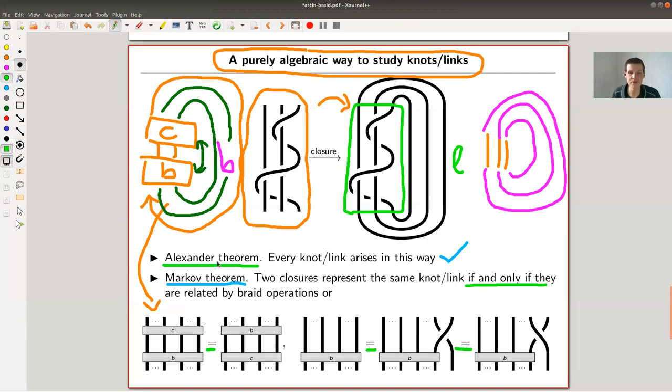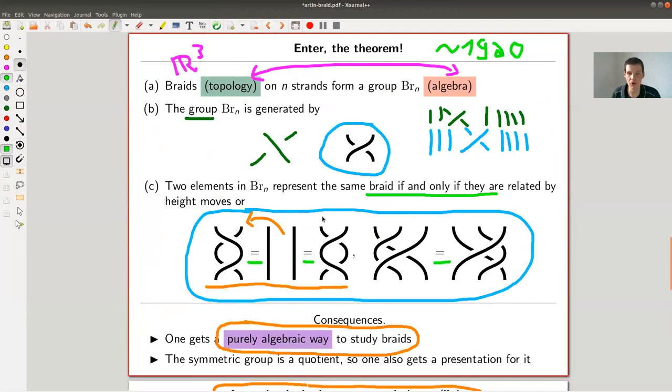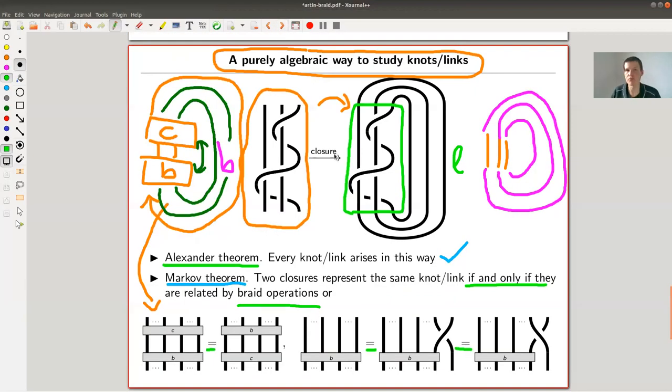In particular, one gets a completely algebraic way to study braids. And because the symmetric group is a quotient, you get a similar presentation for the symmetric group. But that's not the point today. Rather, I would like to stress again that this is ridiculously simple, a surprisingly simple description of this three dimensional geometric topology problem. Just a group given by generators and relations, but easy generators and easy relations.